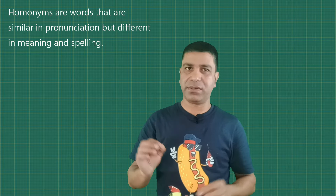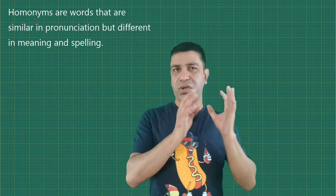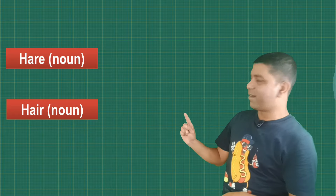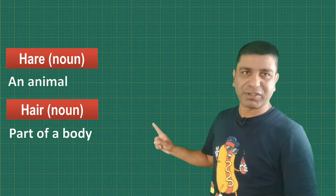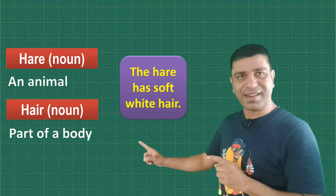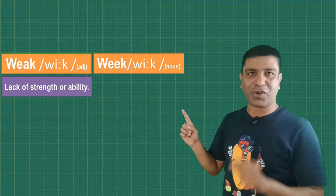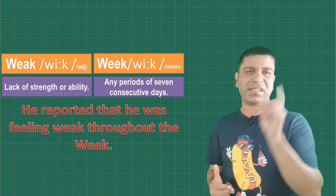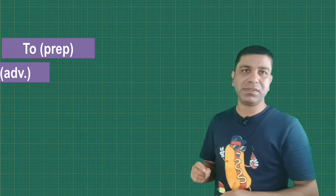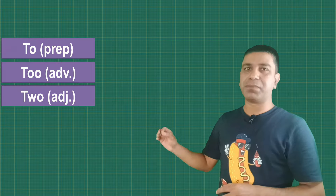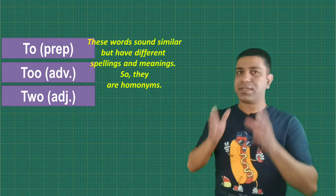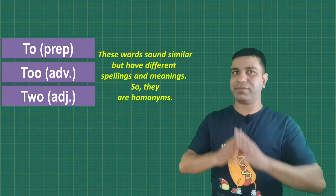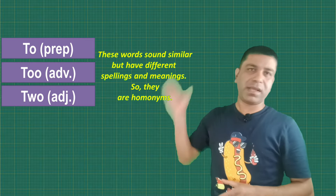Let us first understand what homonyms are. Homonyms are words that are similar in pronunciation but different in meaning and spelling. Sometimes these words are also called phonic pairs because they sound similar. Some common examples of homonyms are hare and hair — hare is an animal while hair is a part of the body: 'The hare has soft white hair.' Weak and week — weak is a lack of strength or ability while week is any seven consecutive days: 'He reported that he was feeling weak throughout the week.' To, too, and two — these words sound similar but have different spellings and meanings, so they are examples of homonyms.